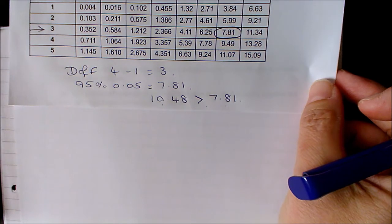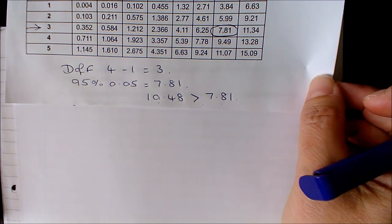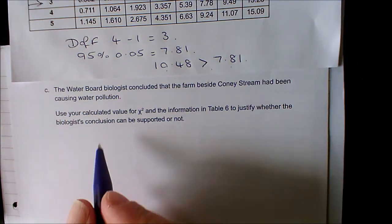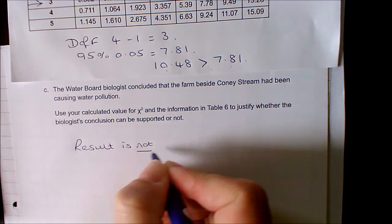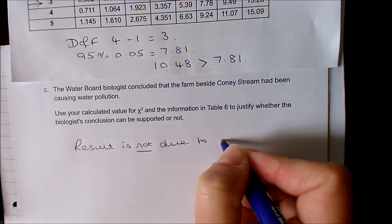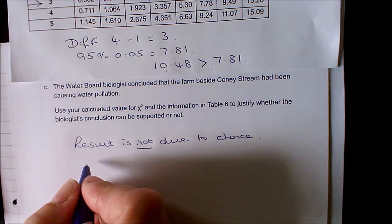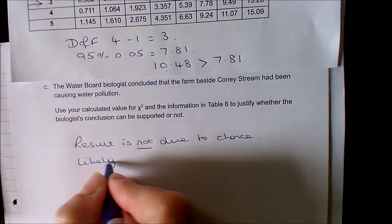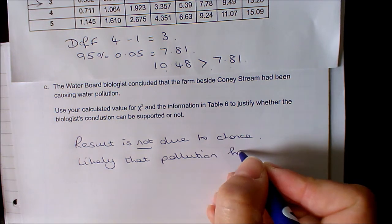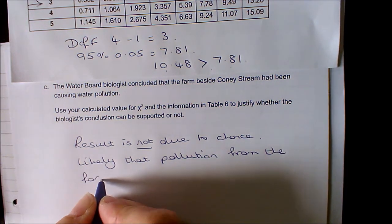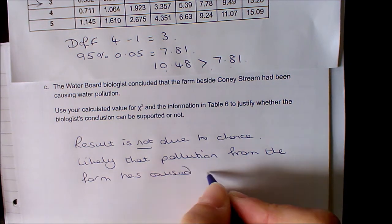What we can say is that because our value of 10.48 is greater than the table value of 7.81, it tells us that our result is not due to chance. There is something else going on, and so yes, it is likely therefore that pollution from the farm has caused a difference.